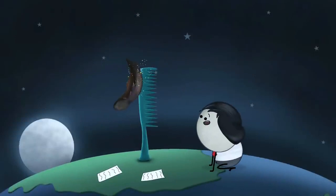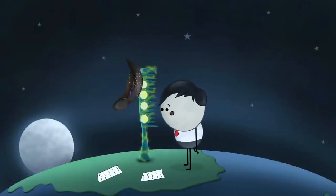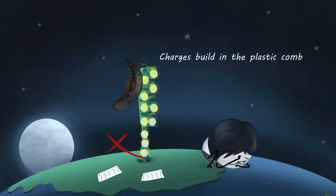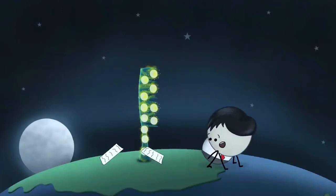It is because plastic is not a good conductor of electricity. It does not allow the electric charges to flow through it onto the earth. As a result, the charges build in the plastic comb, making it electrically charged and enabling it to attract the pieces of paper.